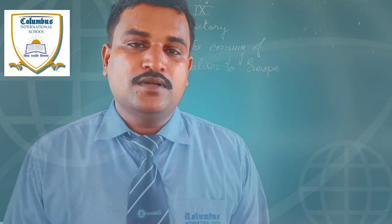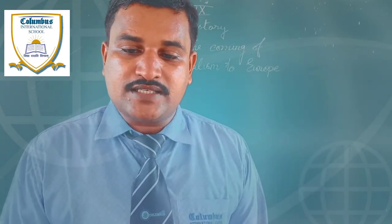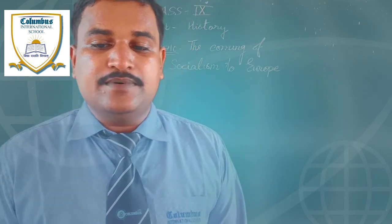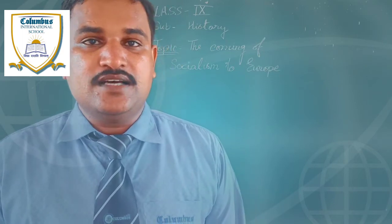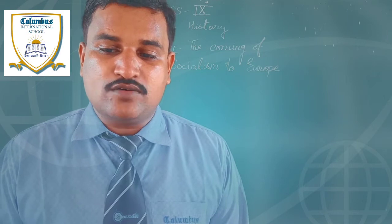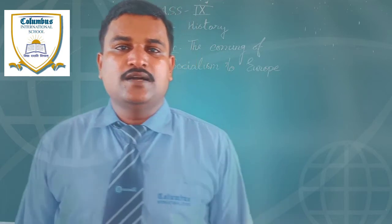Some believed in the idea of cooperatives. Robert Owen, from 1771 to 1858, a leading English manufacturer, sought to build a cooperative community called New Harmony in Indiana, USA. Other socialists felt that cooperatives could not be built on a wide scale only through individual initiatives, so they demanded that governments support and increase cooperatives.